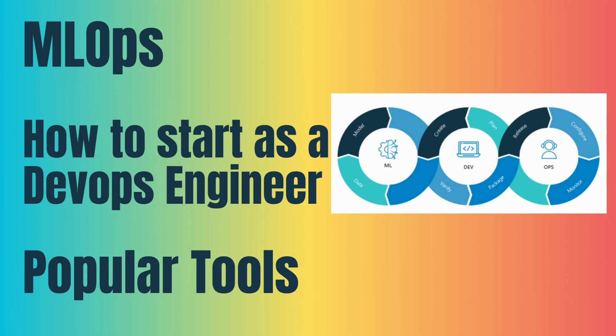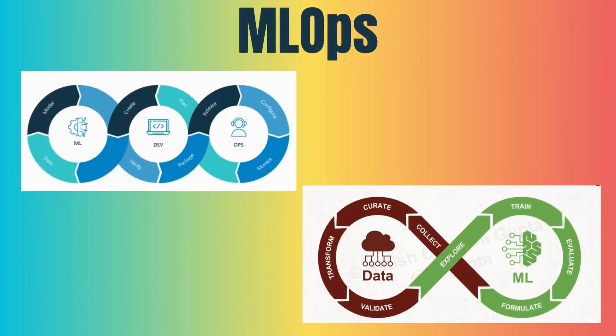MLOps stands for Machine Learning Operations. It is a set of practices that combines machine learning and DevOps to automate the end-to-end machine learning lifecycle, from data preparation to model deployment and monitoring. In MLOps, we say everything is a model — we deploy a model, not just code. It can be a predictive model or an analysis model.